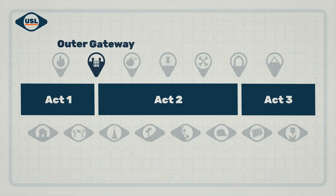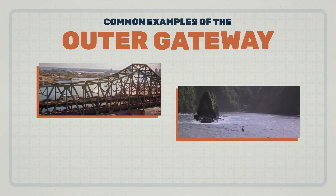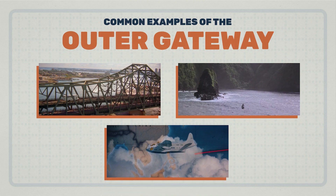We've mentioned the outer gateway a couple times throughout the last few lessons, and now it's finally time to break it down. The outer gateway is our fourth step and is a moment, meaning it usually lasts a single scene. It's one of the shortest moments in most stories and can be as little as a few seconds, and you definitely have seen them before. Driving montages, establishing shots, a plane flying across a map — most of the time, these are outer gateways.